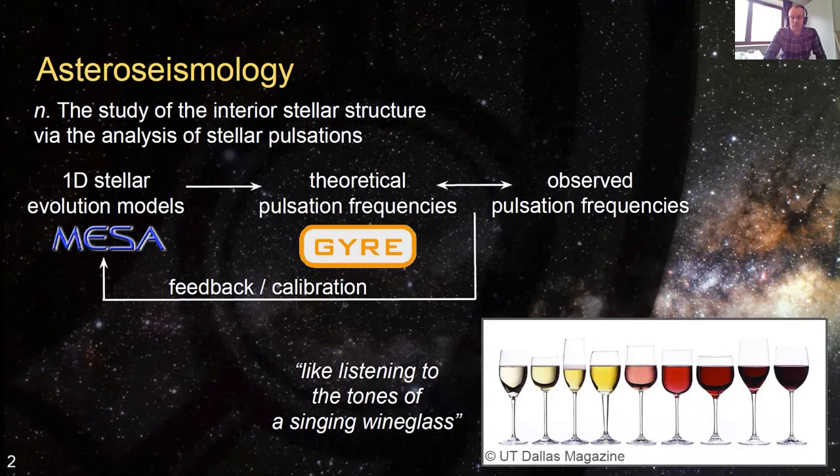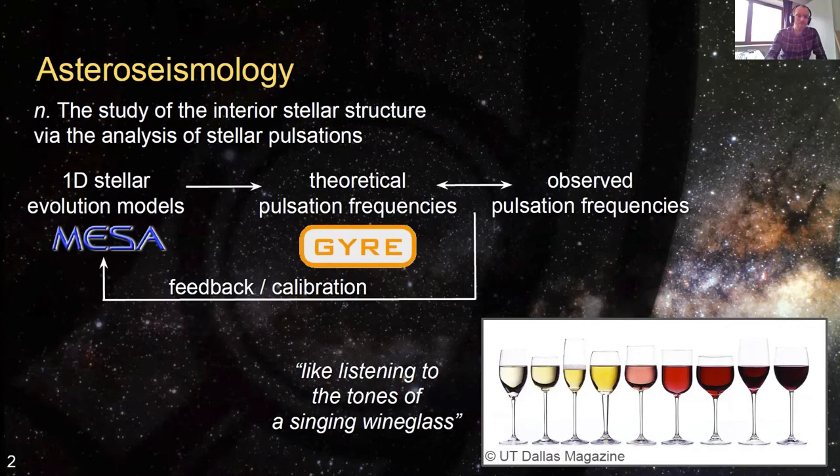In a nutshell, the use of asteroseismology is basically like listening to the tones of a singing wine glass. If we can listen to the tones of a wine glass, we can determine: is the wine glass full? Is it empty? What sort of liquid is in it? And essentially, we do the same for our stars.